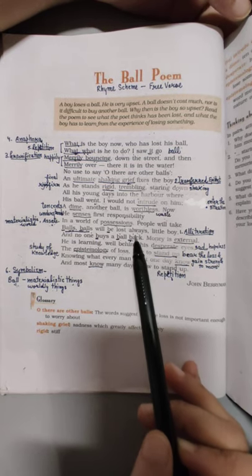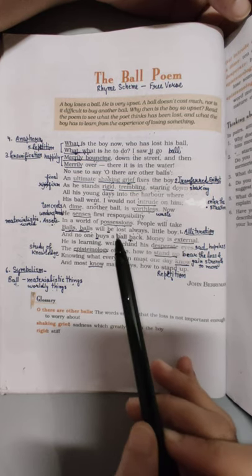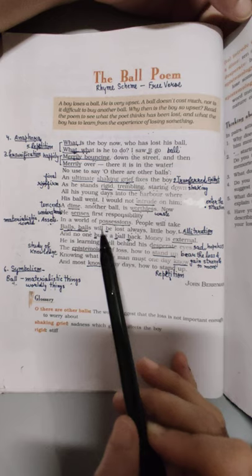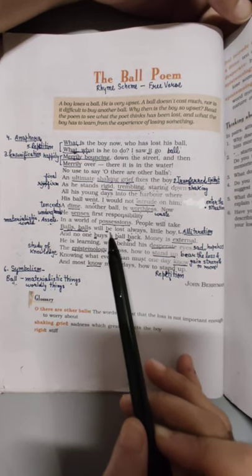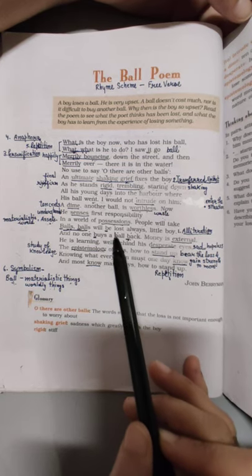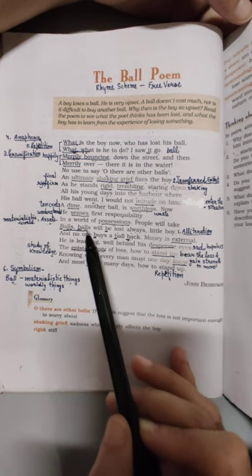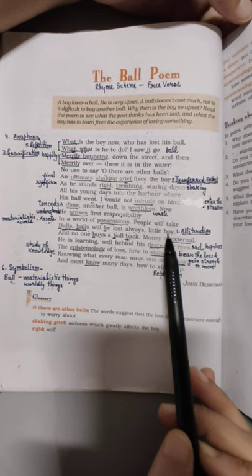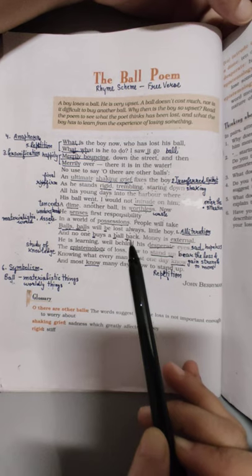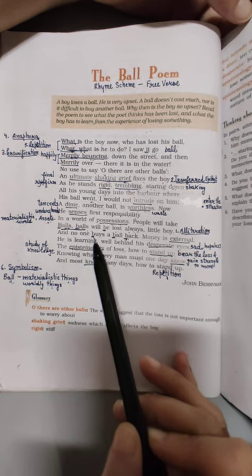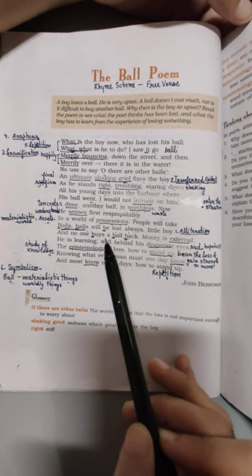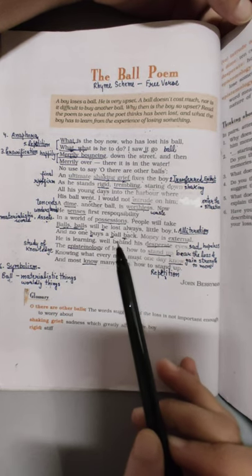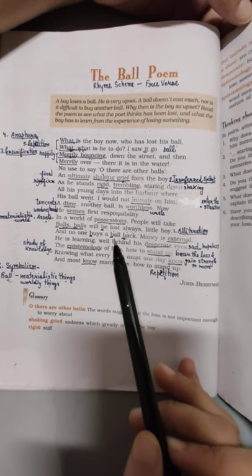Dear students, ek na ek din us chiz ka ant hona hi hota hai. Woh chizein ya toh toot phhot jati hai ya kisi bhi tarike se humse alag ho jati hai. So people will take balls and balls will be lost always. Little boy, woh chahta hai us little boy ko ki woh yeh chiz samajh jaye. And no one buys a ball back. Koi bhi aisa nahi hai ki jo chiz woh kho dete hai, usi particular khoi hui lost thing ko woh wapas kharid sake. We cannot buy that ball back.